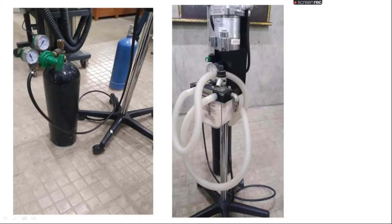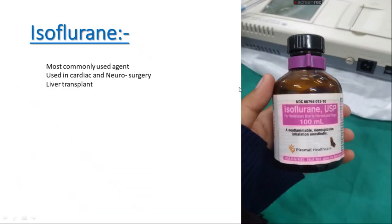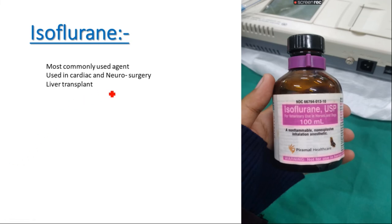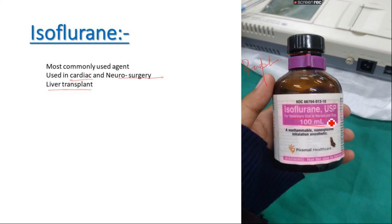This is our oxygen cylinder, which provides oxygen, and this is the anesthetic machine we have discussed. Now we are going to talk about isoflurane, which is most commonly used in our clinics. It is used in cardiac surgery, neurosurgery, and liver transplants, and has a lot of use in veterinary medicine as well. The vial is 100ml, is most commonly purple in color, and is used for horses and dogs. It is non-flammable and non-explosive.